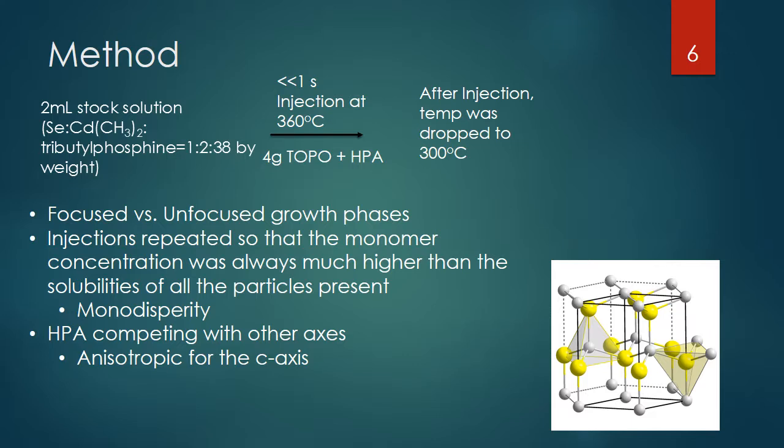They wanted to figure out what was the difference between these two phases. The unfocused growth meant that all axes were growing uniformly, giving you the quantum dot shape forming instead of the rod they wanted.